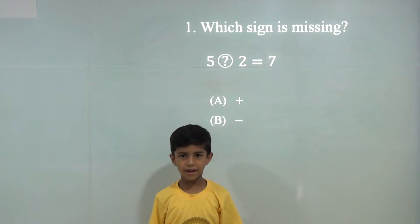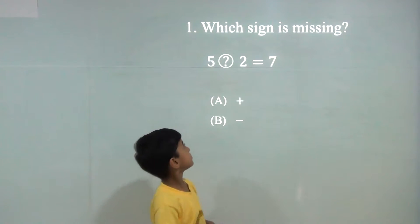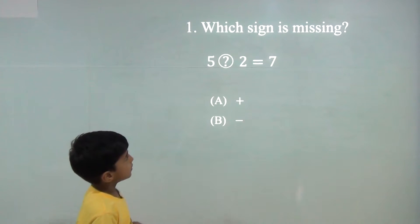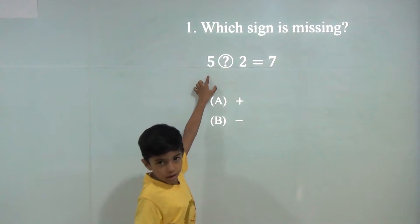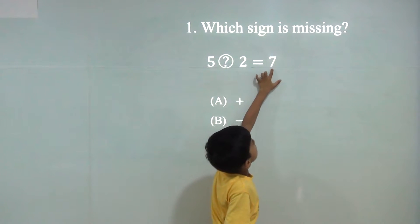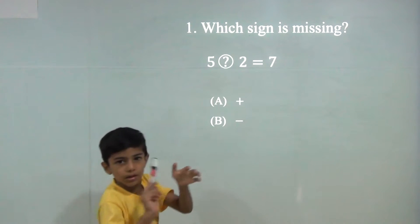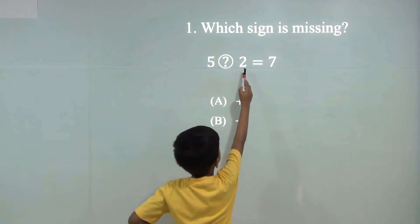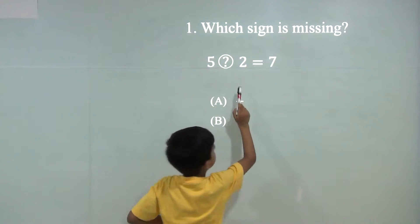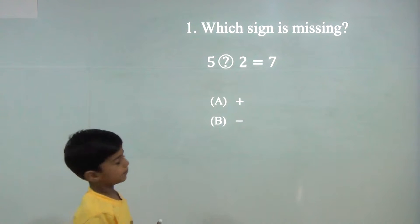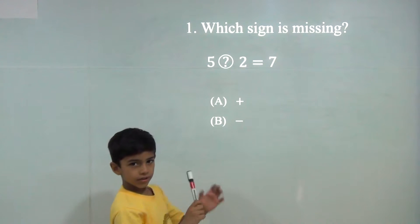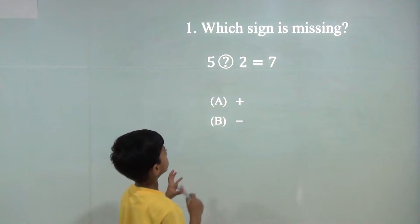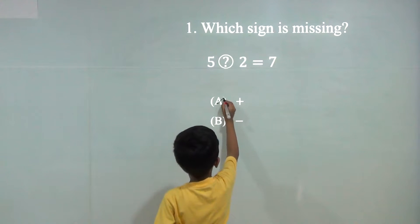Today we will learn identifying the correct sign. Here is a smaller number but it is becoming big. So 5 plus would become because there is a bigger number, so the answer would be 8.